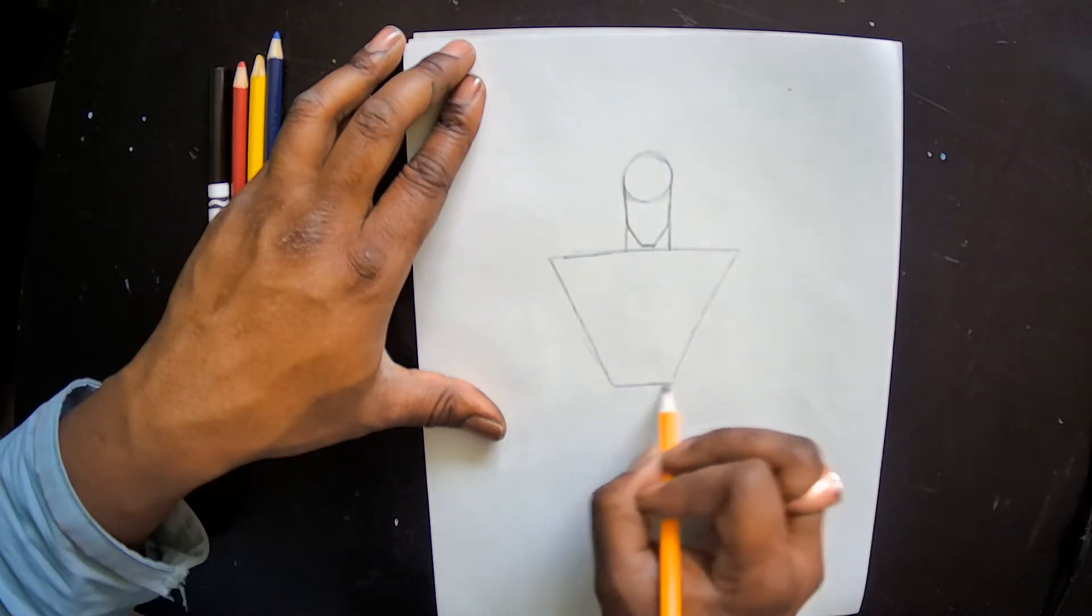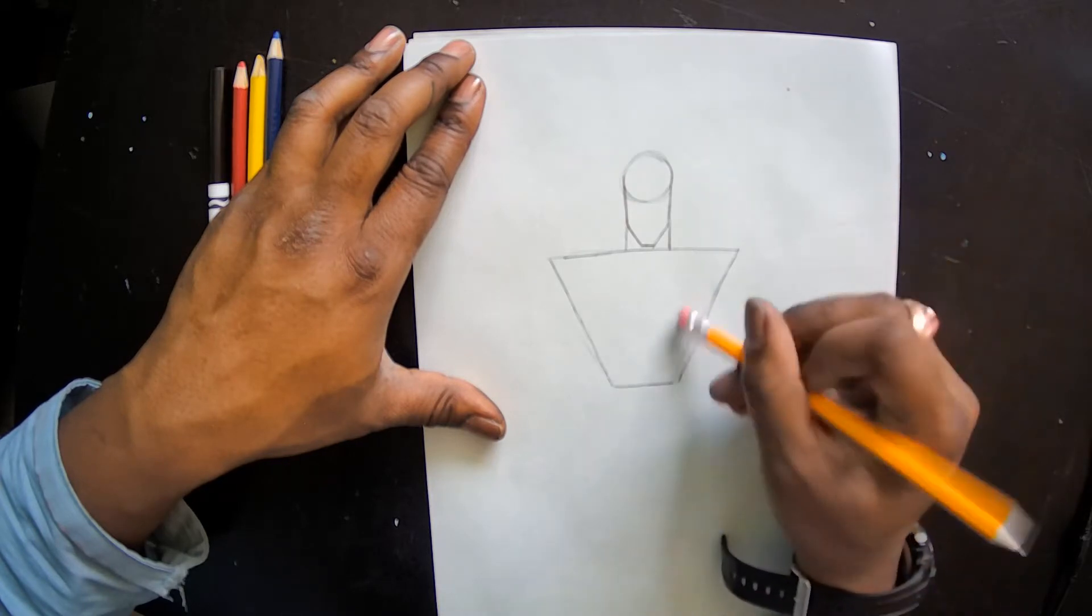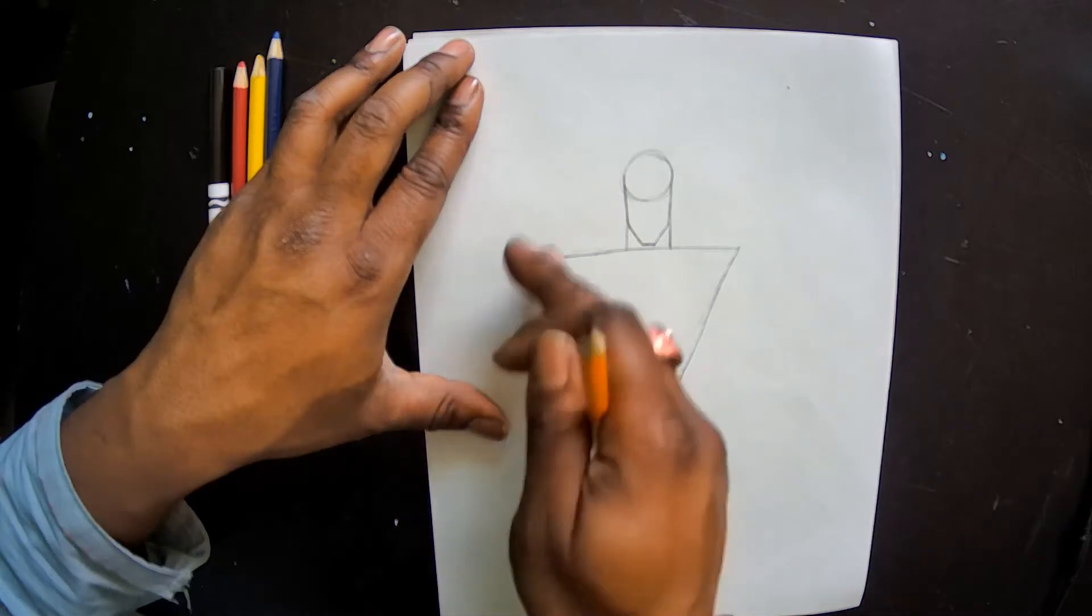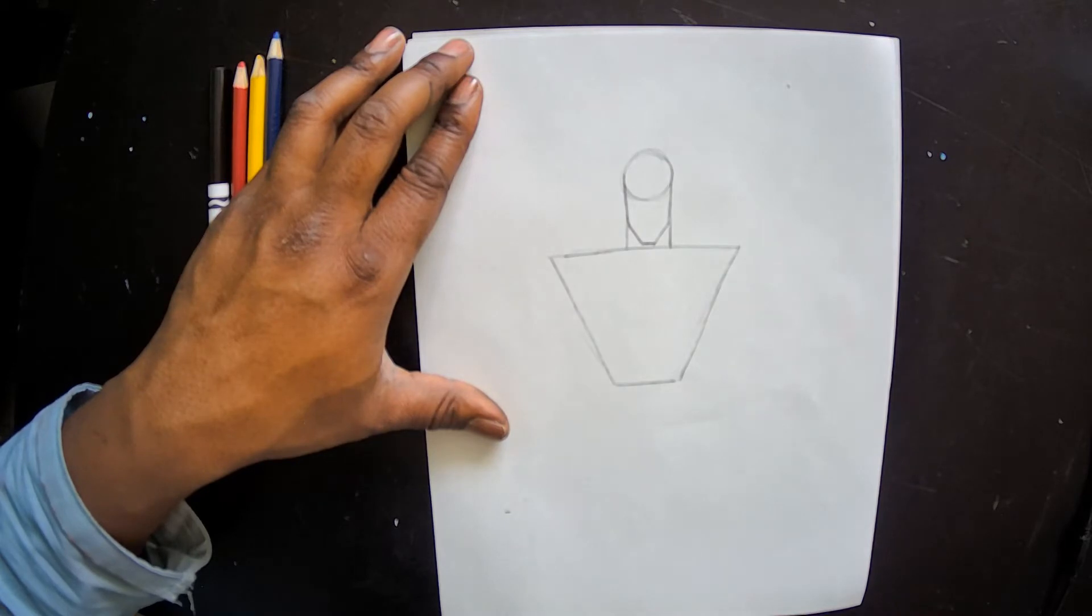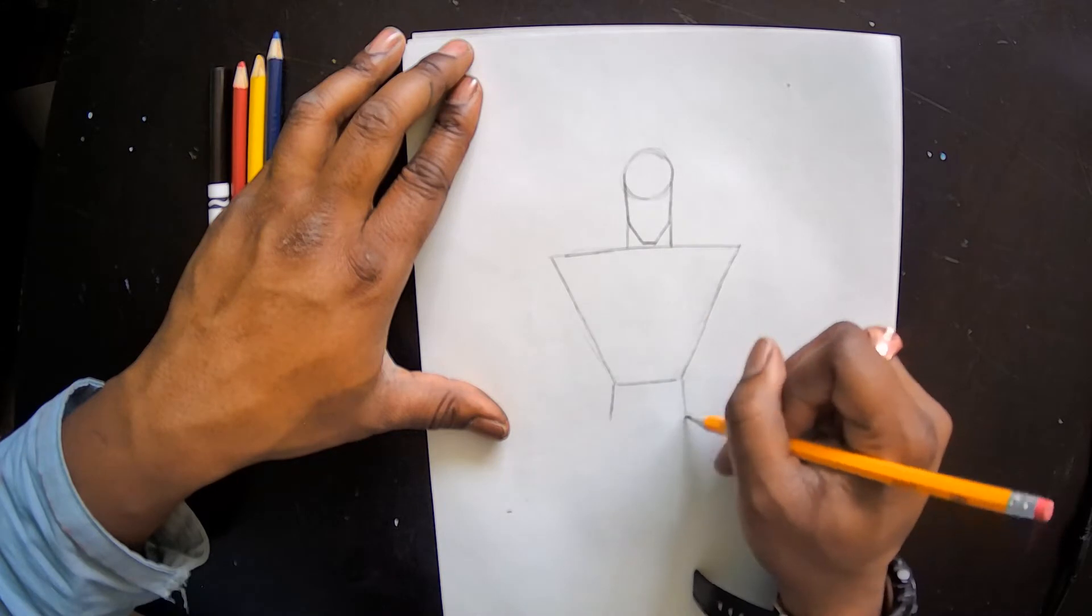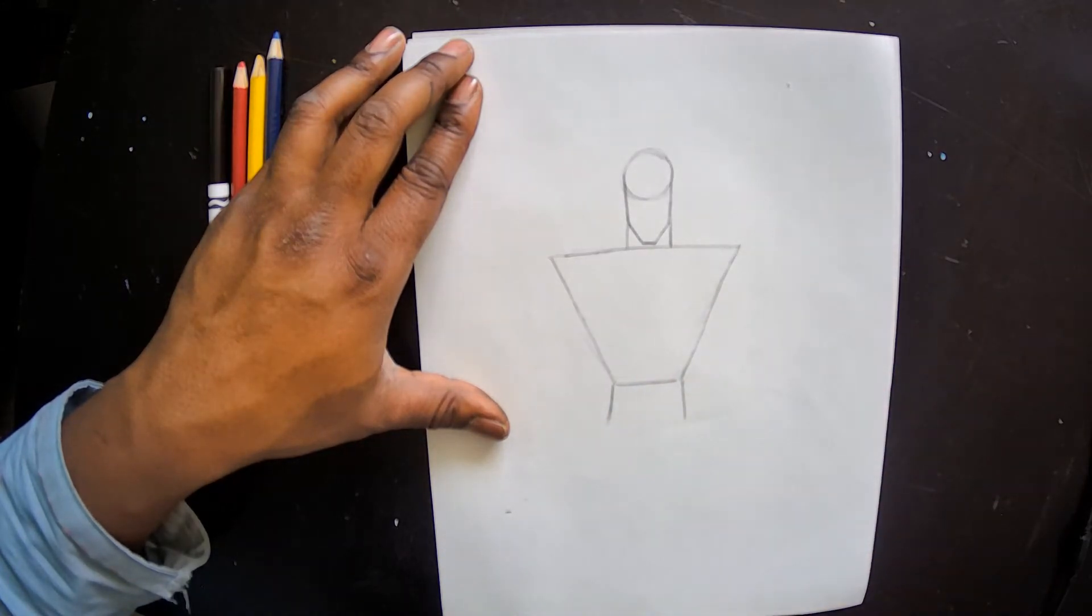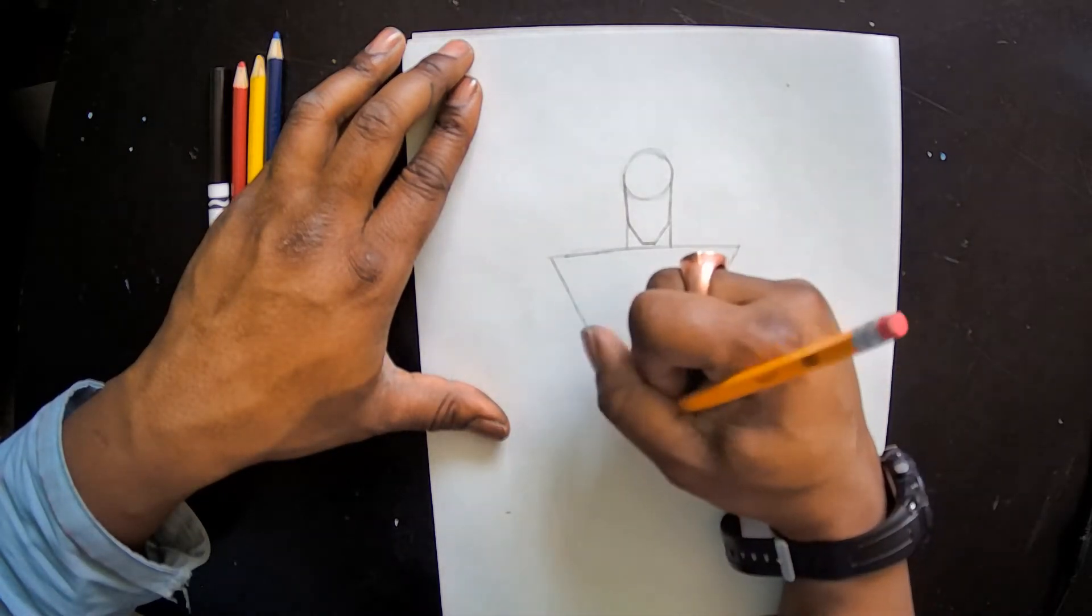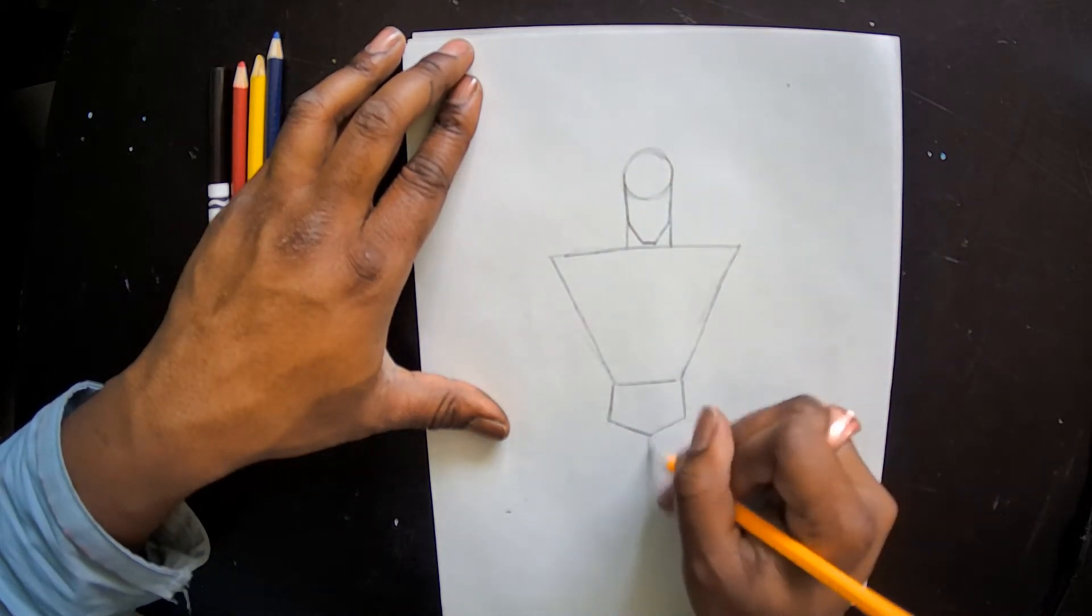The top part becomes his shoulders and where we stop would be about where his waist is. We want it to be as straight and as even of a shape as we can make it. After that waistline, we're going to bring two lines down and then angle two lines in to create his red shorts. We're going to make a line straight down the middle from here.